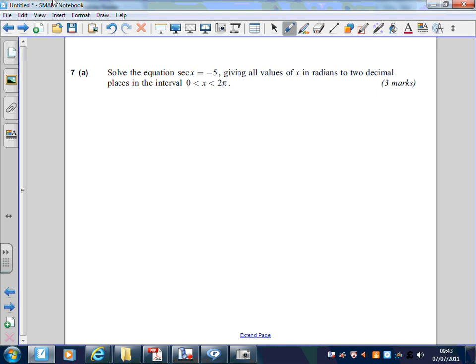Straight away, I'm going to launch into this. That means 1 over cos x is equal to minus 5, which immediately can be written as cos x equals minus 1 over 5.